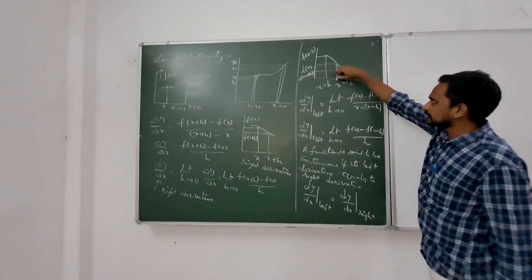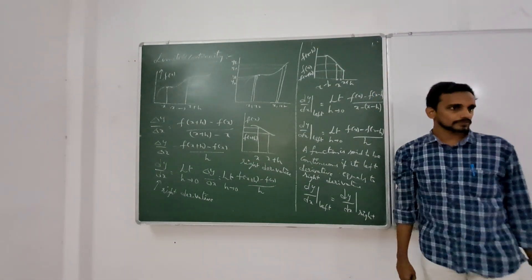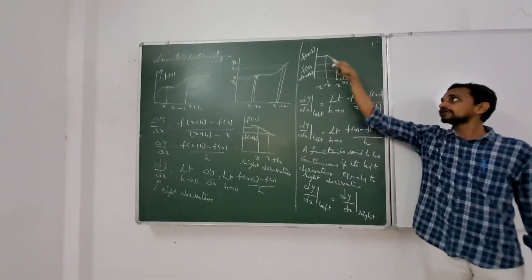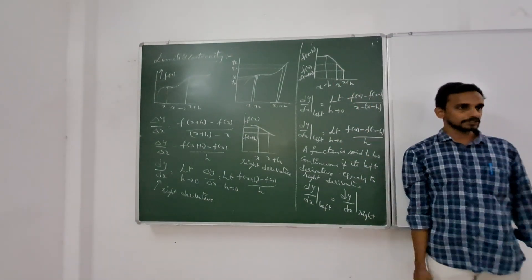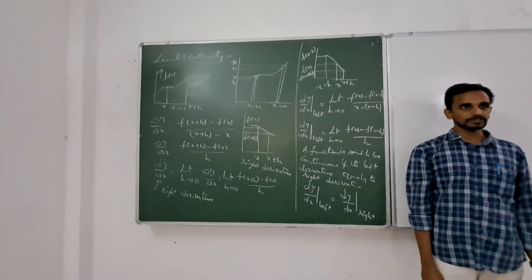Around x we are taking a left derivative and a right derivative. If both are equal, slope is equal, slope is same on the left side as well as on the right side. Means the function is continuous.